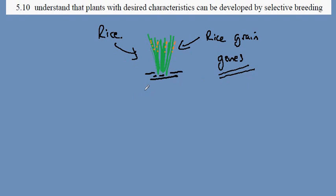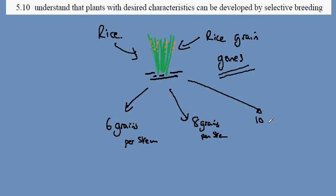He notices that some plants have 6 grains per stem, others have 8 grains per stem, and others still have 10 grains per stem.